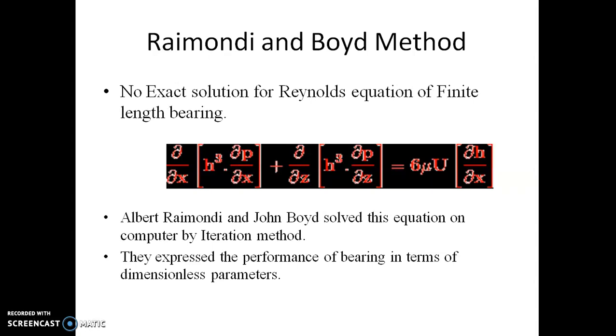Next one is Raimondi and Boyd Method. The Reynolds equation for finite length of bearing is shown here. There is no exact analytical solution to this differential equation. So Albert Raimondi and John Boyd solved this equation by using iteration technique.